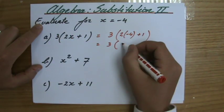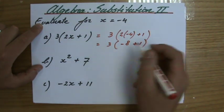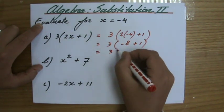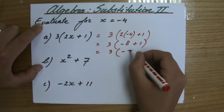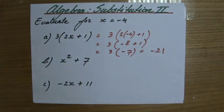2 times minus 4, that would be minus 8, plus 1. And that would be 3 times minus 8 plus 1 is minus 7, and 3 times minus 7 is minus 21. So that would be the answer to the first question.